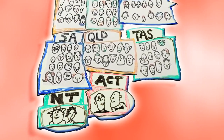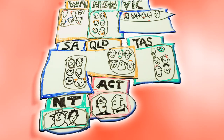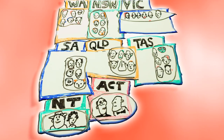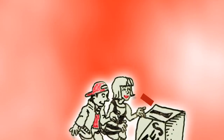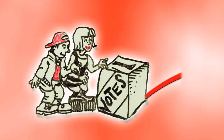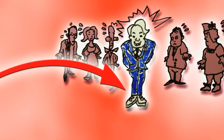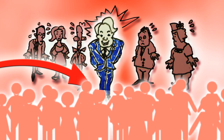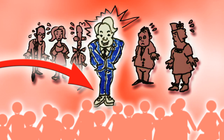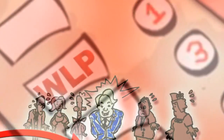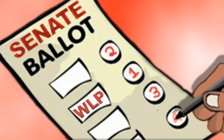Six Senators from each state vie for election. Five seats from each state go to one or other of the major parties, and the sixth seat will go to a minor party, like WikiLeaks.